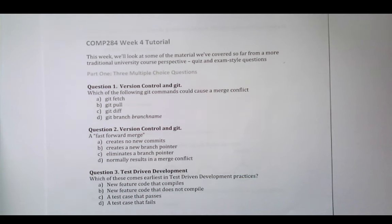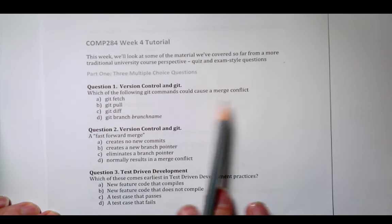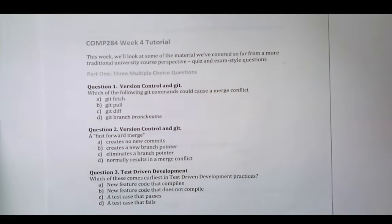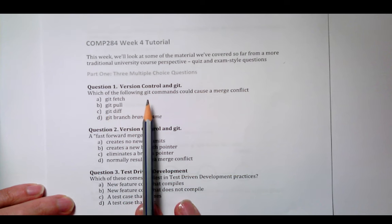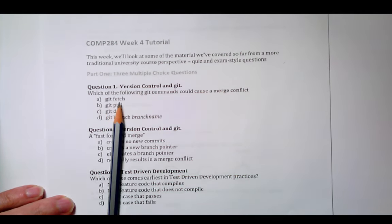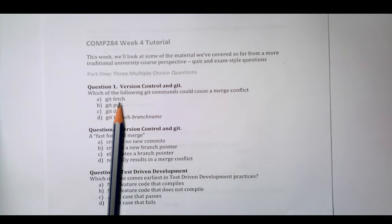Version control and git. Which of the following git commands could cause a merge conflict? Well, it could only cause a merge conflict if it involves a merge. So what does git fetch do? Git fetch fetches any of the commits and the bits of the directed acyclic graph of history that might be up on the remote, on GitHub, but not yet down in the local repository, and it pulls them down into the directed acyclic graph.